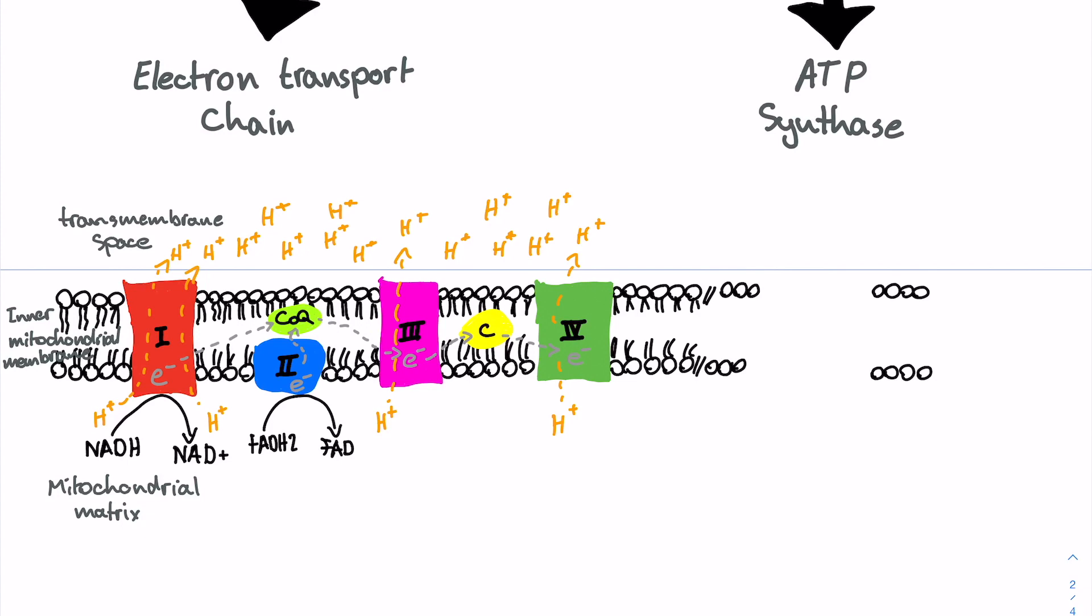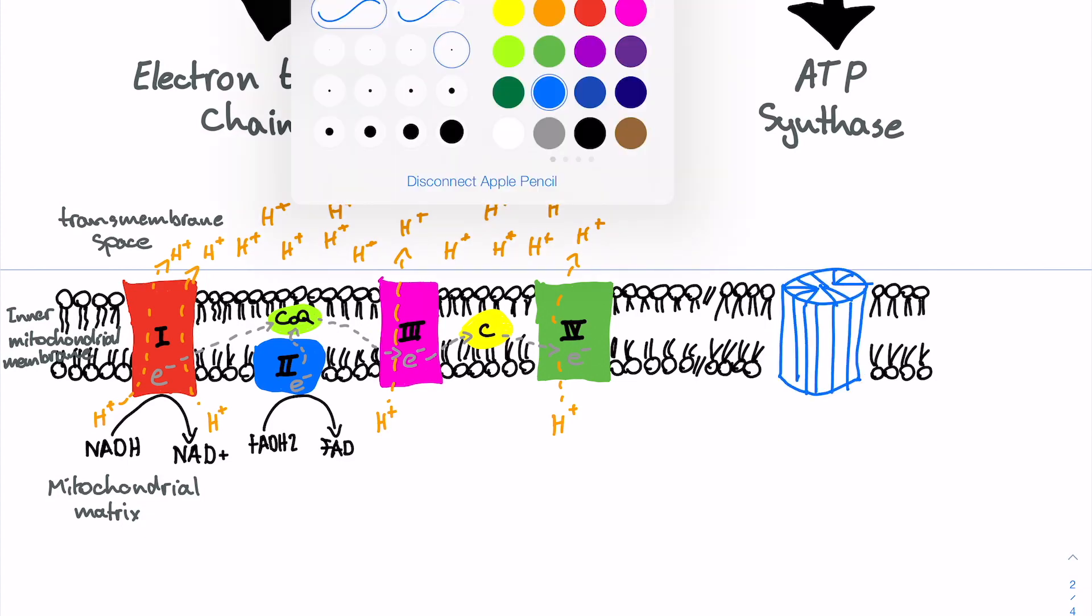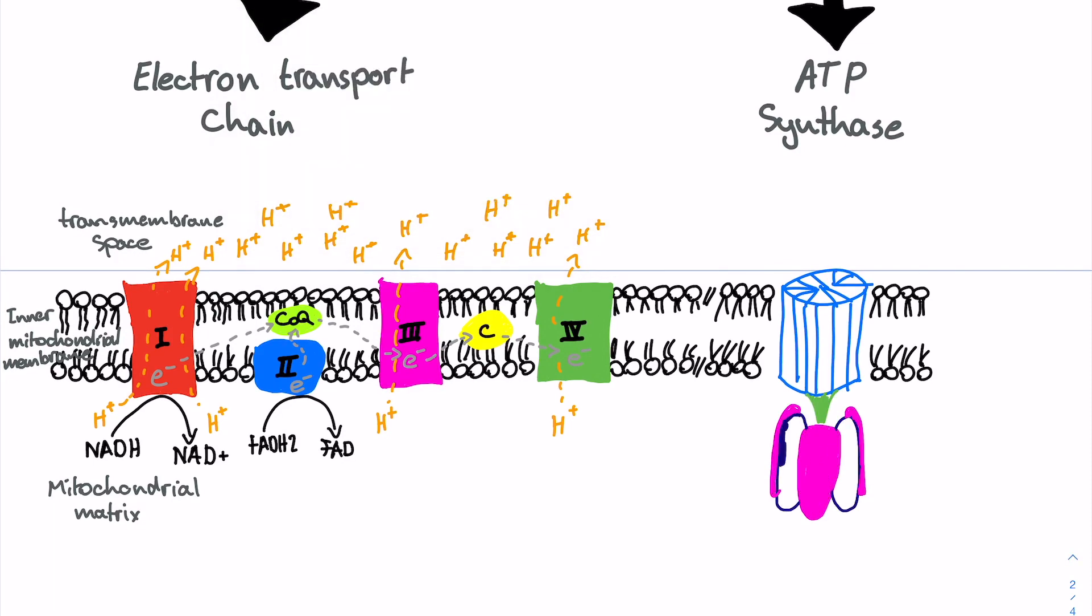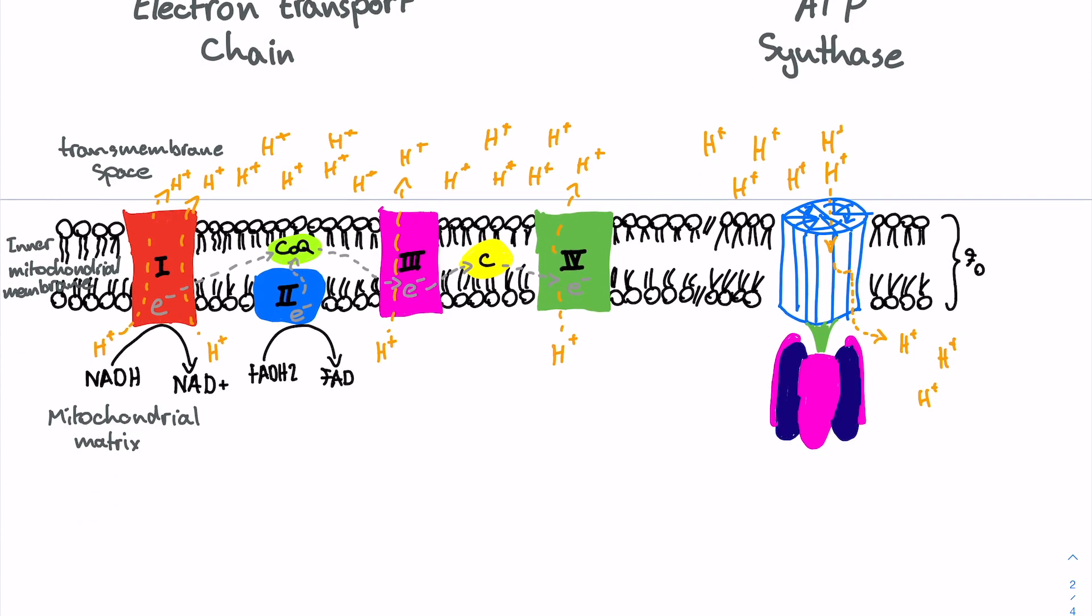This proton gradient is then used to drive ATP synthase. This is a multi-subunit enzyme that allows the protons to flow back from the transmembrane space into the mitochondrial matrix. Going down the concentration gradient means that energy is released, which is used to rotate the inner membrane, or F0 portion, of the enzyme. This, in turn, provides enough energy to turn ADP and inorganic phosphate into ATP in the mitochondrial matrix, or the F1 portion of the enzyme.